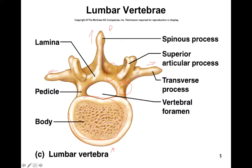There's a superior articular process, which articulates with the vertebra above, and an inferior articular process that articulates with the vertebra below. One way to distinguish the lumbar vertebrae from all the others is that they have a huge body. This large body is because the lumbar vertebrae bear lots of forces from the body.